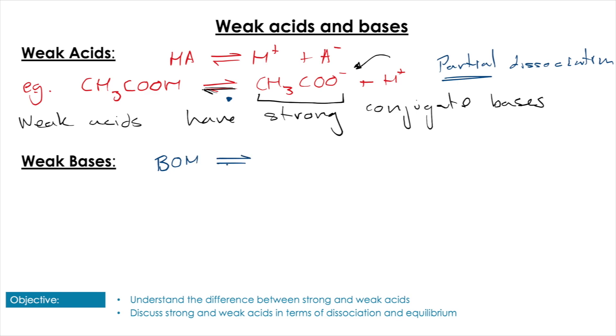Weak bases, very similar. We're still going to break down into B+ and OH-, but again the equilibrium is going to lie to the left hand side. So things like ammonia are classic examples of this. Yes, ammonia does want to accept that proton from water, but this equilibrium is very much going to lie to the left hand side.